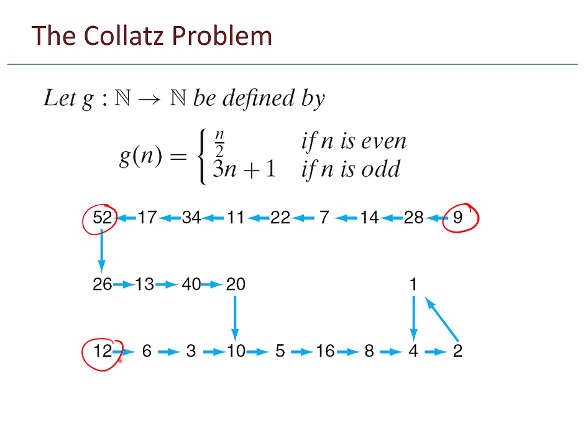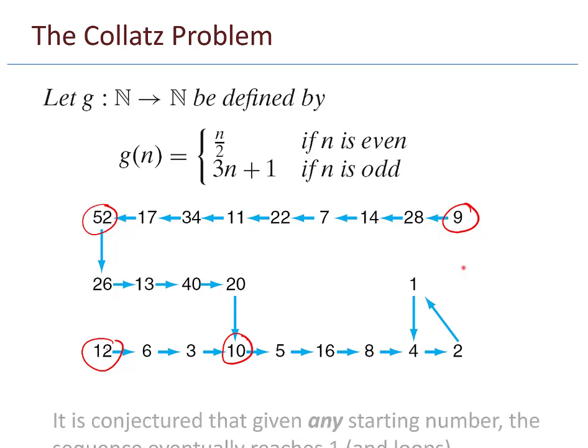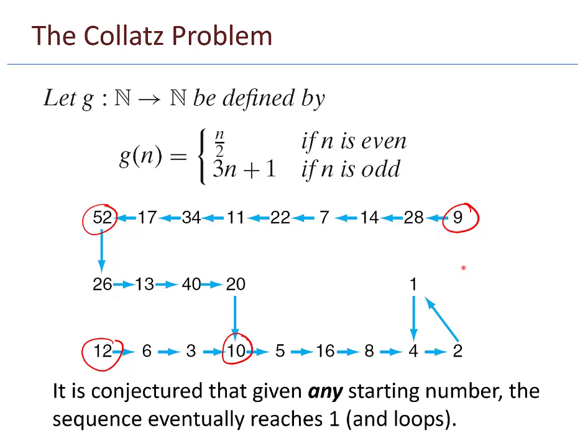If I had started with the number 12, we can see that at some point it hooks onto the sequence right at 10. And so starting at 12 will give me that 4, 2, 1 loop at the end also. It is conjectured that given any starting number, the sequence eventually reaches 1 and consequently loops after that 4, 2, 1.